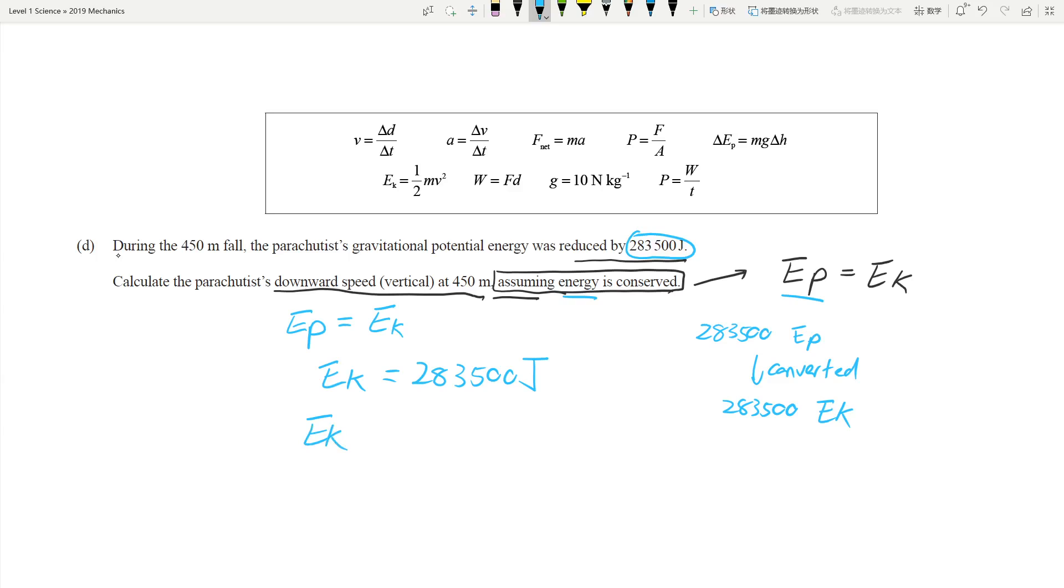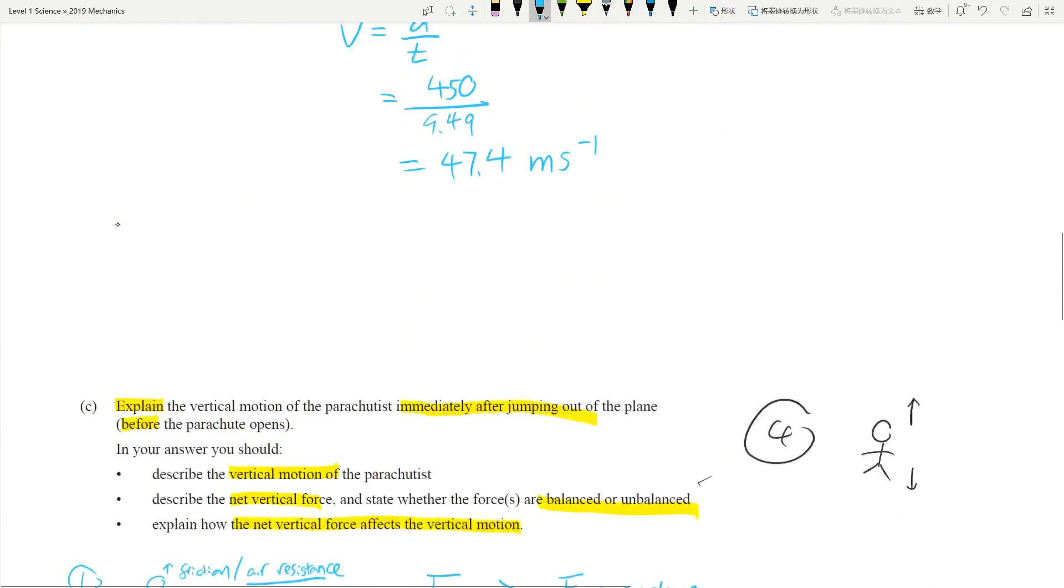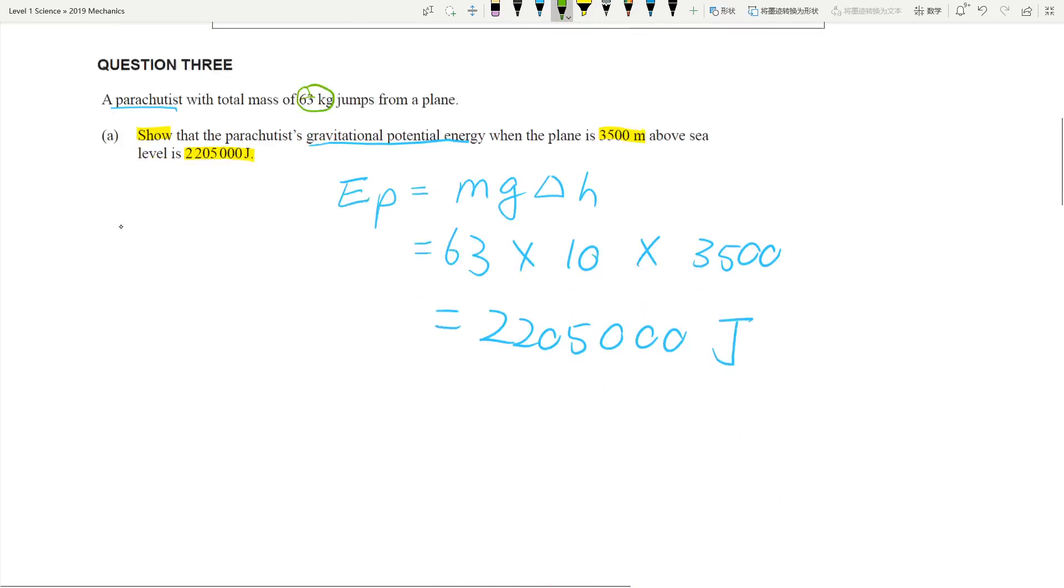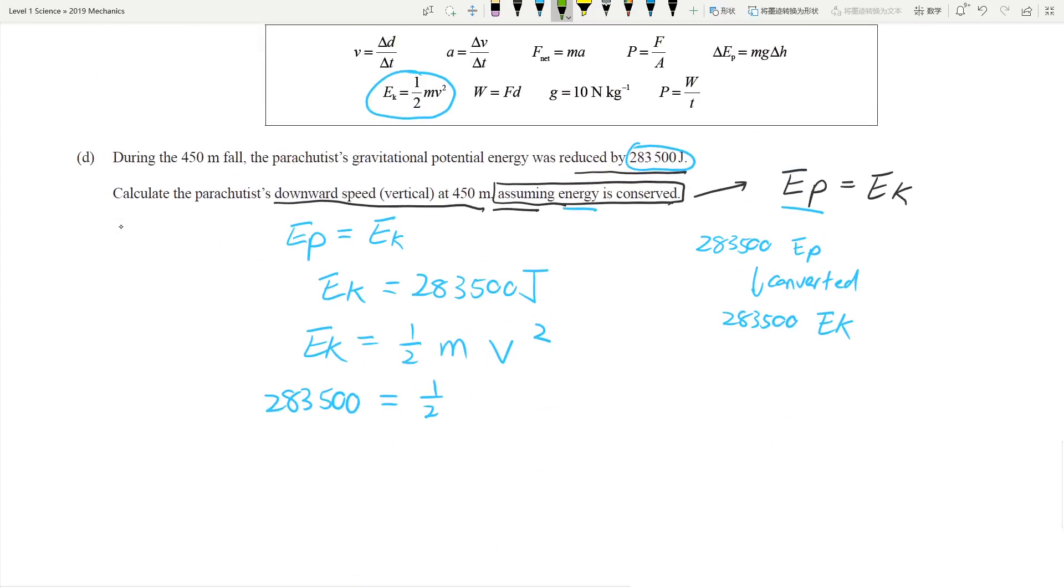So EP equals EK. This is what we assume. What is EK? Reduced by 283,500. So that means you lost 283,500 of EP, which is converted to 283,500 of EK, assuming energy is conserved. So EK is now 283,500 joules. How do we calculate EK? Here's EK. EK equals half MV squared. What's EK? EK is the number right in front of us, right above the equation. Half is just half. How heavy is a parachutist? Let's go up. You have to go all the way up to question 3a to find this particular section. So it's not the nicest way to test your knowledge, but you have to understand you have to get your number from everywhere in the equations. So that would be 63 kilograms, and then V, don't forget the squared.